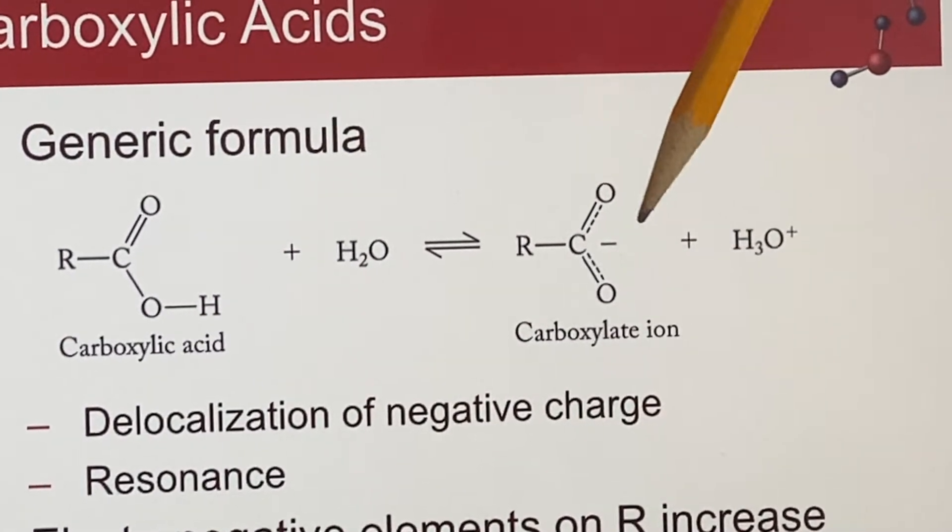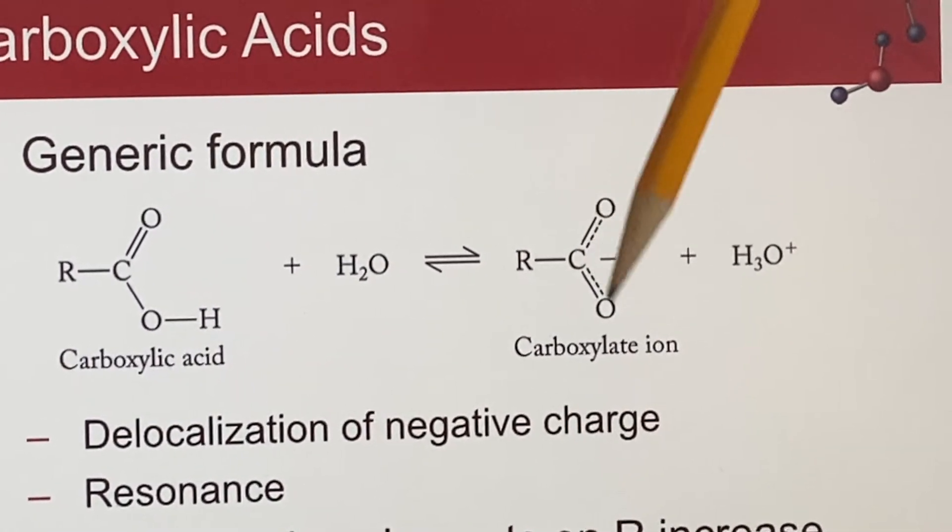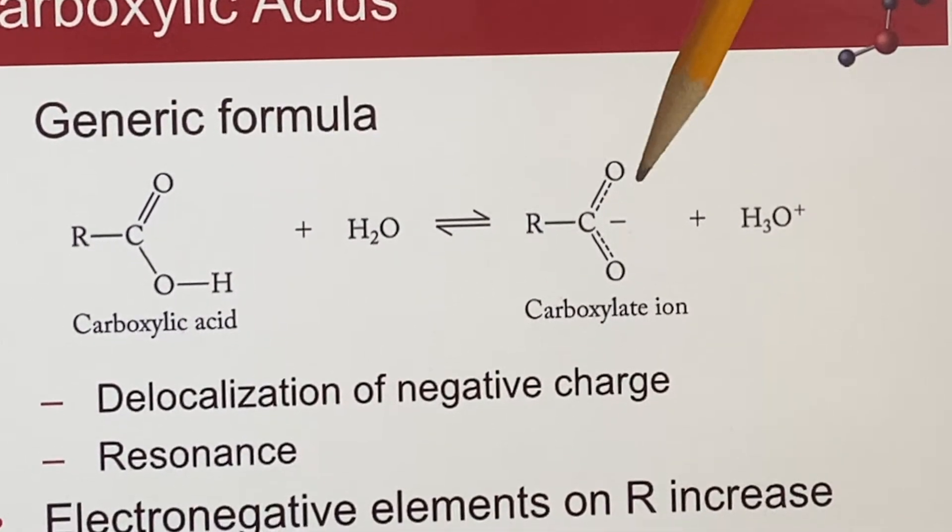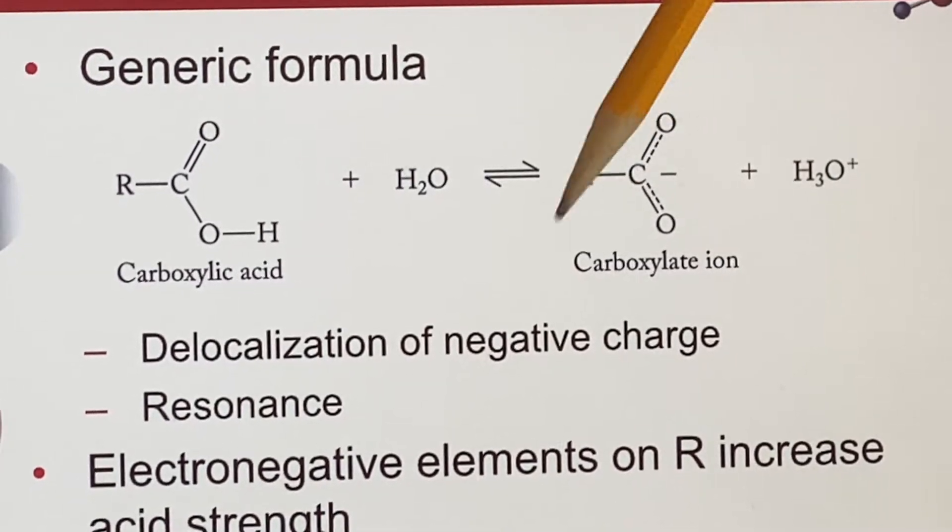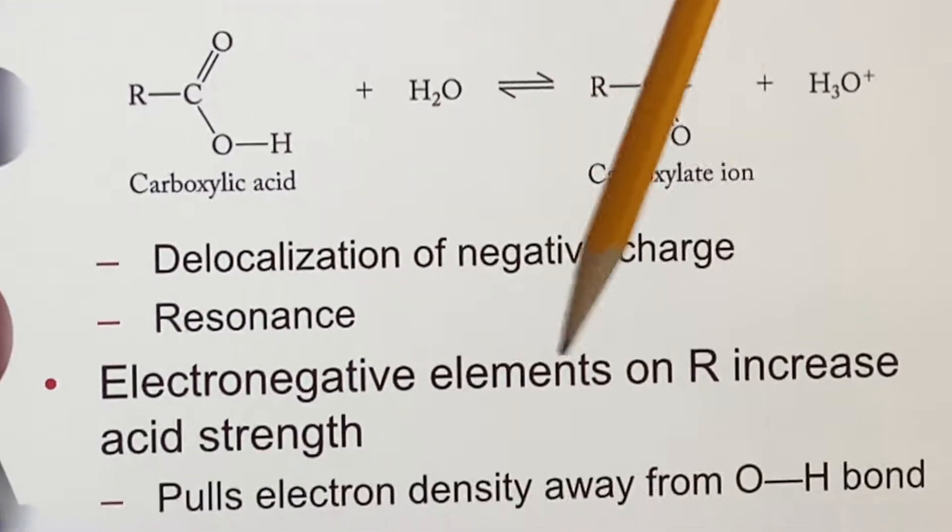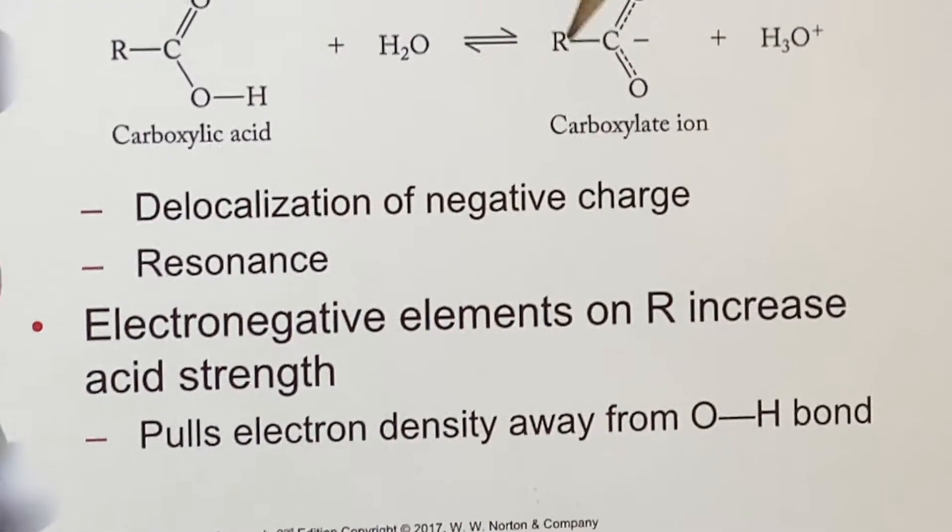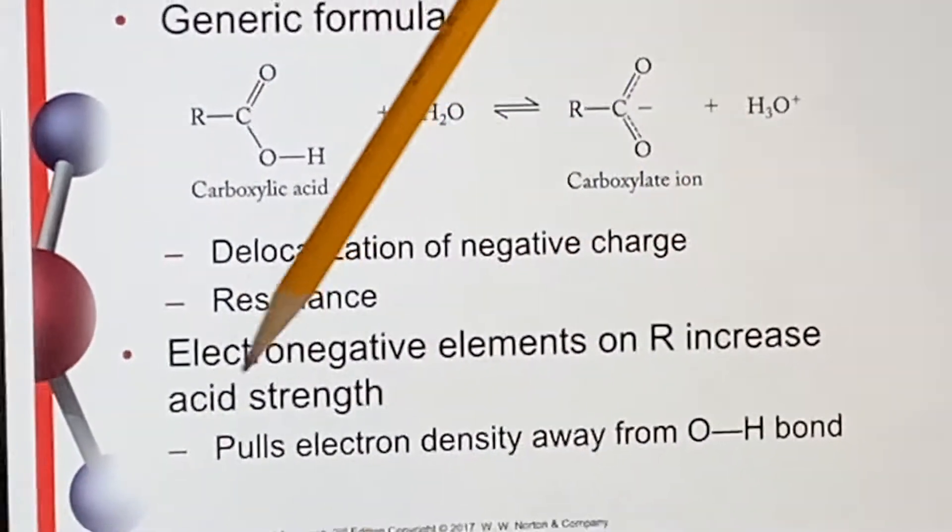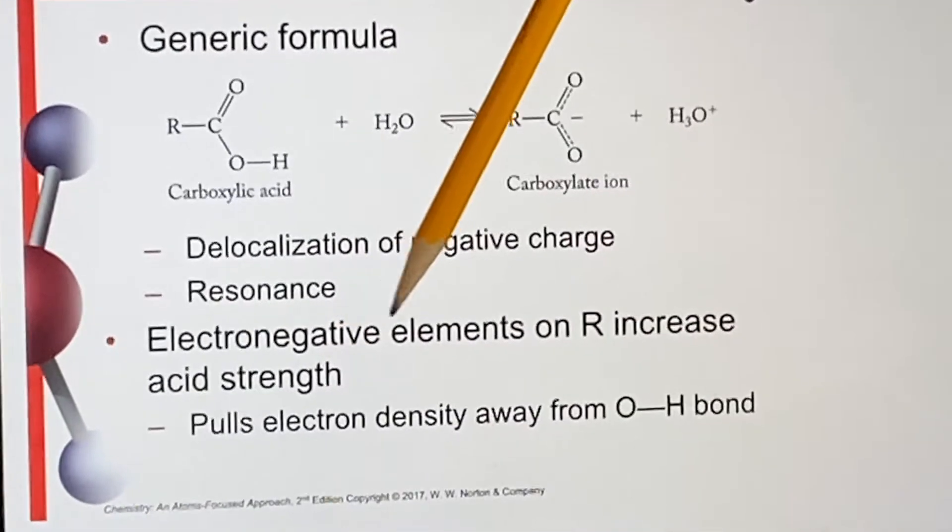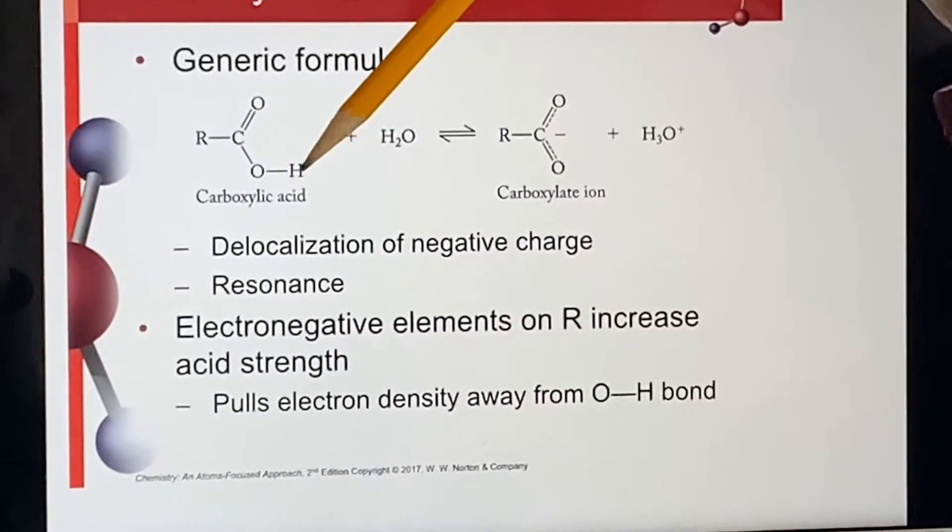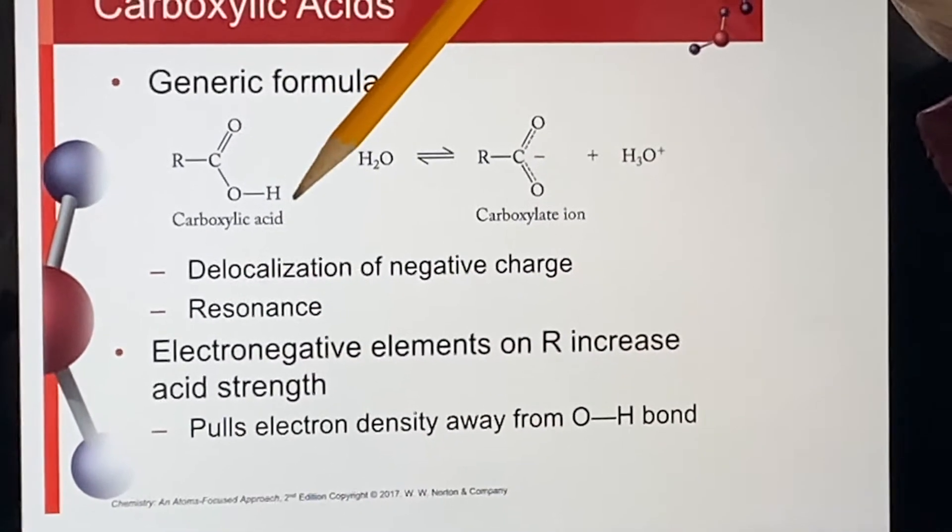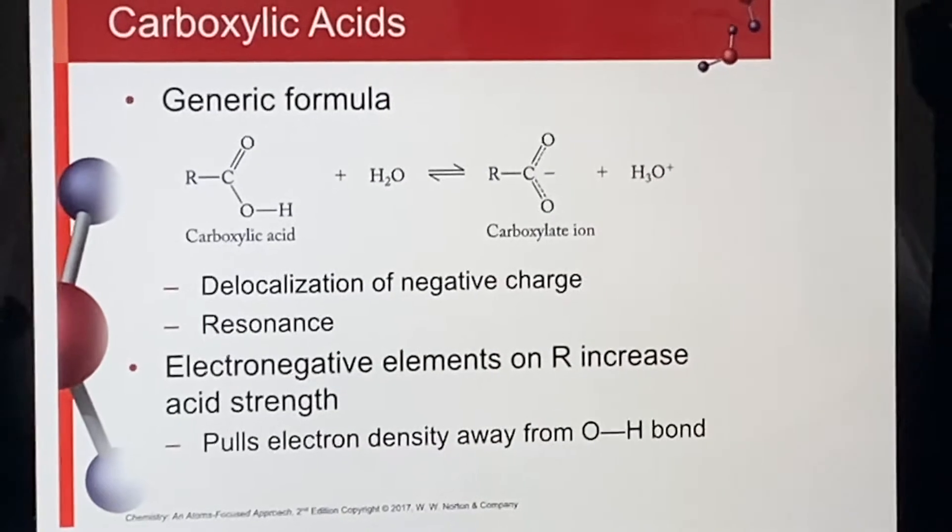So this sort of thing where you might not necessarily expect it to come off—yes, it's got more options on resonance, and so it's more likely to remove itself from the situation. If you have electronegative elements over here in R, then they will increase the acid strength because they will pull more electron density away from this bond, allowing the H+ to escape more easily.